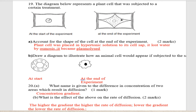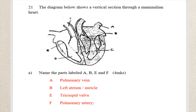Question number twenty: what is the name given to the difference in concentration between two areas which results in diffusion? That is called the concentration gradient. Part b: what is the effect of the above on the rate of diffusion? The higher the concentration gradient, the higher the rate of diffusion.